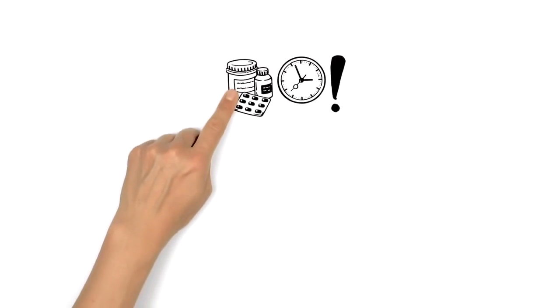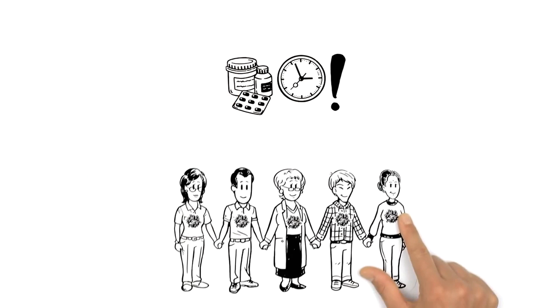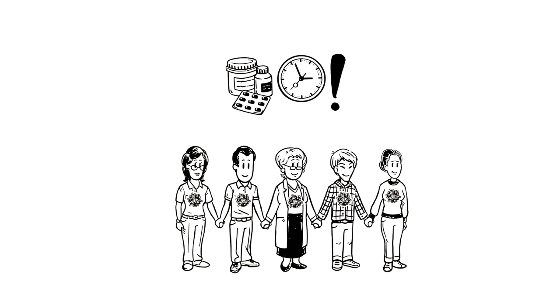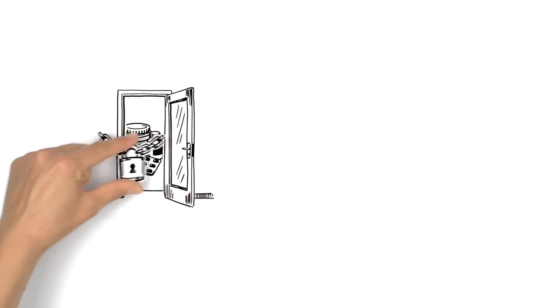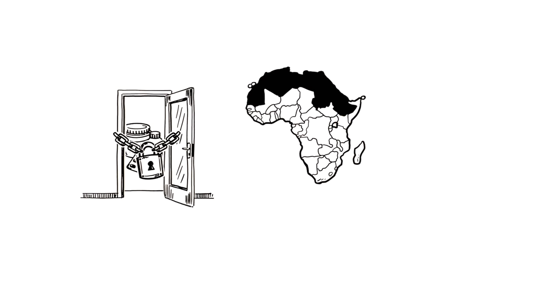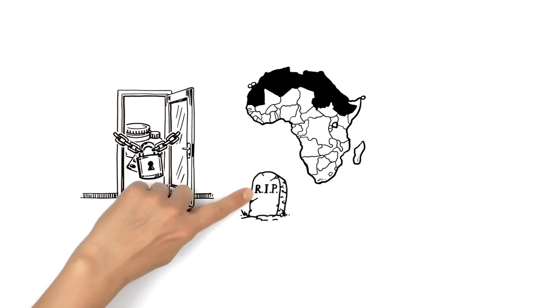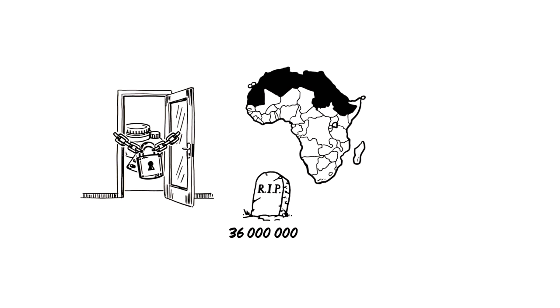By starting treatment early, people with HIV can now live long, healthy lives. Unfortunately, many people still lack access to medication, especially in sub-Saharan Africa. Over the last 30 years, about 36 million people have died, while 2 million more are infected each year.